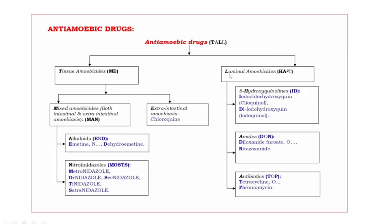Next, we come to the luminal amoebicides. These are further subdivided into three groups. The mnemonic is HAT, but the bold letters are H and A squared: H means 8-hydroxyquinolines, A means amides, and one more A means antibiotics.